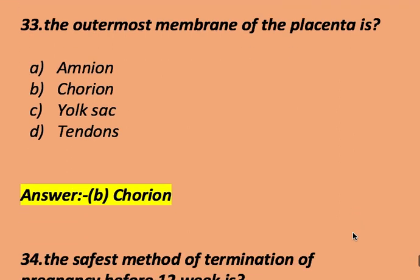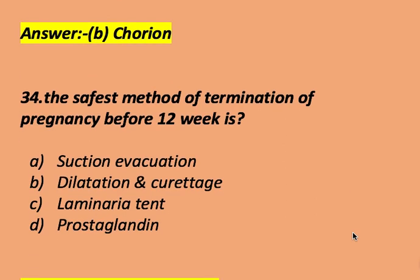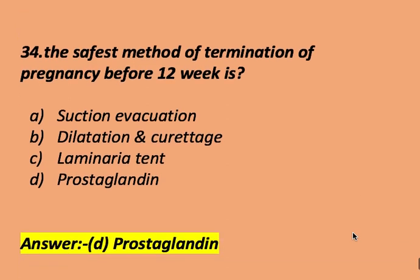The safest method of termination of pregnancy before 12 weeks: suction evacuation, dilatation and curettage, laminaria tent, or prostaglandin. The right answer is prostaglandin. Prostaglandin is the safest method of termination of pregnancy before 12 weeks.